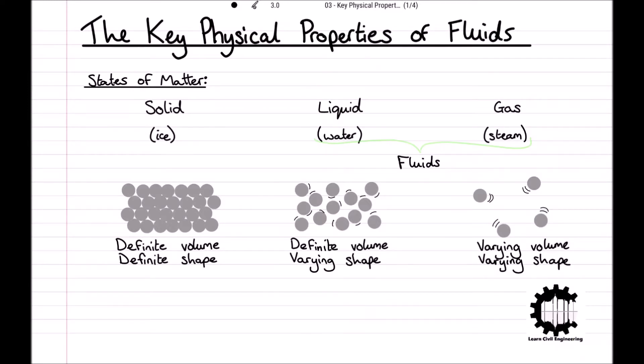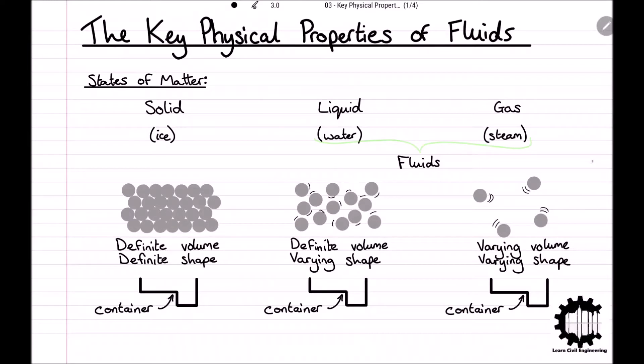We can demonstrate these abilities for matter in each state to vary or keep a constant volume and shape by exploring what would happen if we placed matter of each state into a container. Due to its definitive volume and shape, if you were to place a solid into a container the solid would not change at all.